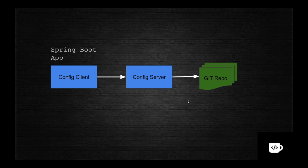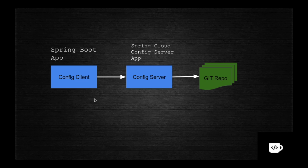The config client is going to be a Spring Boot application. The config server is also a Spring Boot application but with Spring Cloud Config Server dependencies added. The config client will have config client dependencies, and both will access a property file from a Git repository — which could be GitHub, SVN, or a local Git repo.